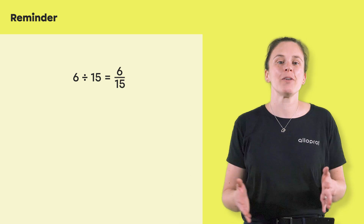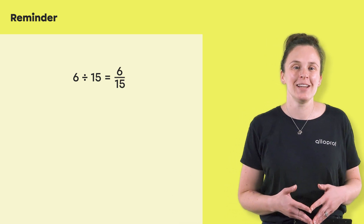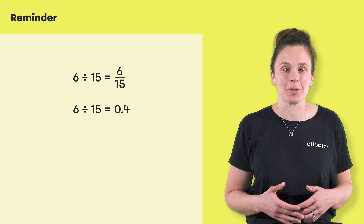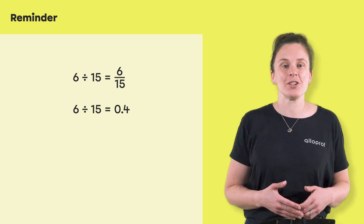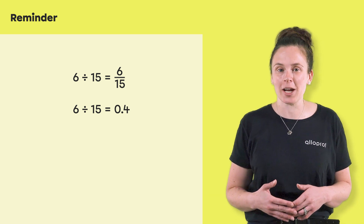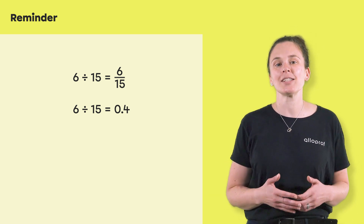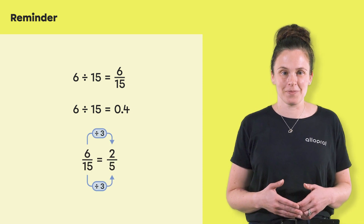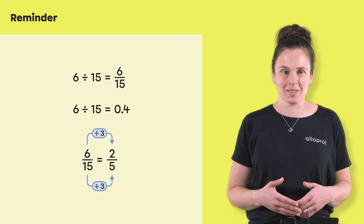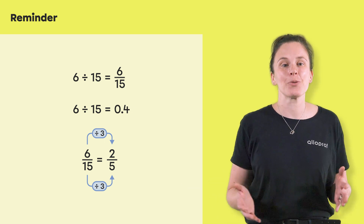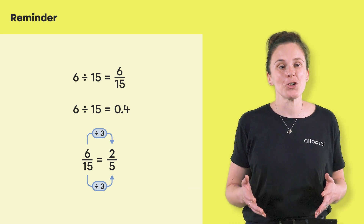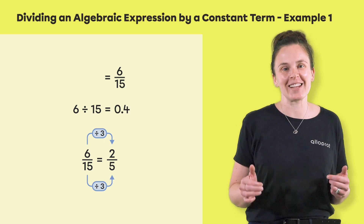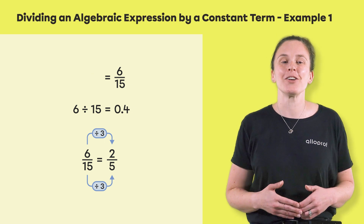Division can be written in the form of a fraction. Since the division of two numbers can sometimes result in a decimal number, the reduced form of the division of an algebraic expression may contain decimal numbers or an irreducible fraction. If you need a reminder on how to reduce a fraction, make sure to watch our video on that topic. You can find the link in the description under this video.